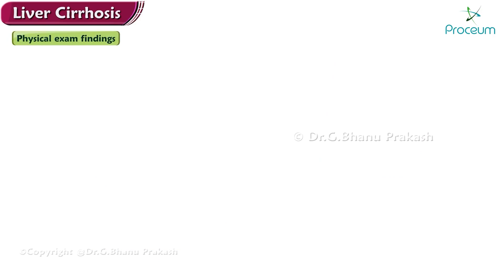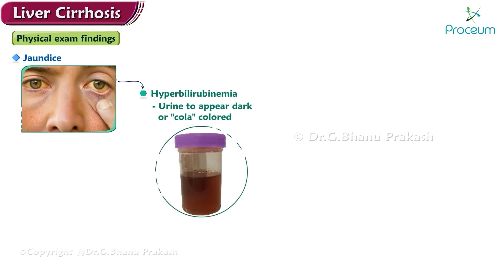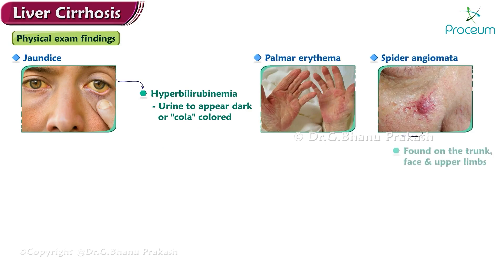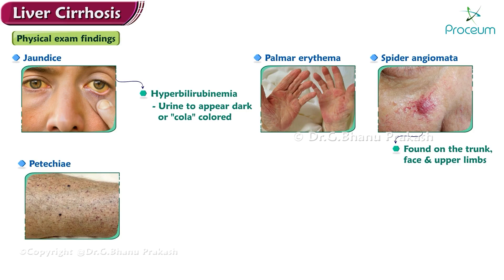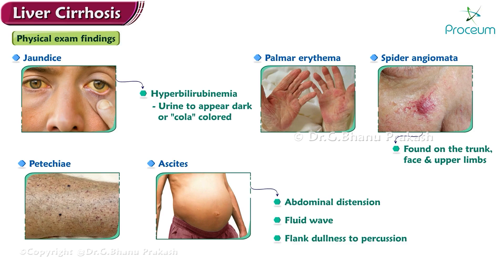Now let's go over the physical exam findings. Patients with cirrhosis present with several physical findings, including: jaundice — hyperbilirubinemia may also cause the urine to appear dark or cola-colored; palmar erythema; spider angiomata, most frequently found on the trunk, face, and upper limbs; petechiae; and ascites — physical findings in patients with ascites include abdominal distension, a fluid wave, and flank dullness to percussion.